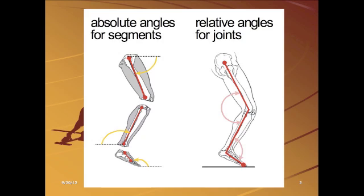And this is pretty straightforward stuff. You get absolute angles here on the left, and what makes an angle absolute is that it's an angular orientation of a body segment with respect to a fixed line of reference, and I think the key part of that is a fixed line of reference.